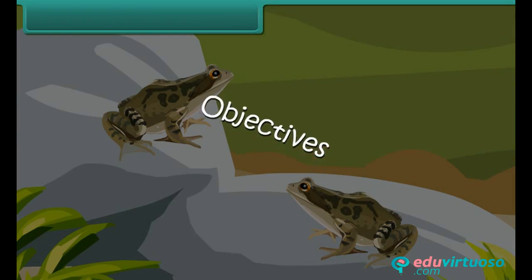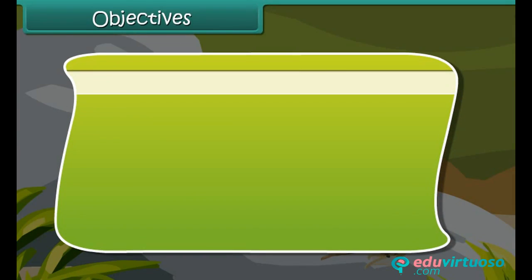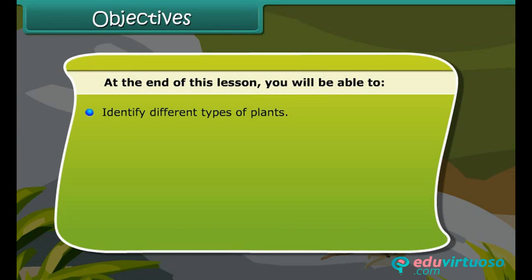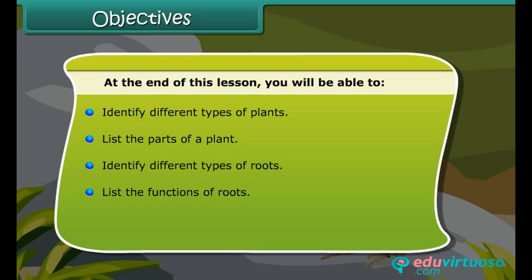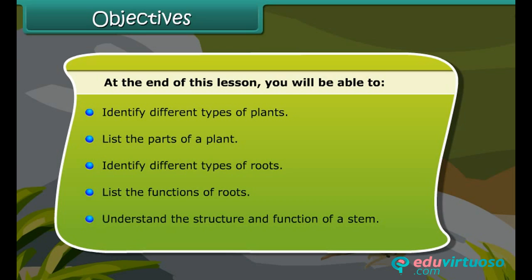Objectives. At the end of this lesson you will be able to: identify different types of plants, list the parts of a plant, identify different types of roots, list the functions of roots, and understand the structure and function of a stem.